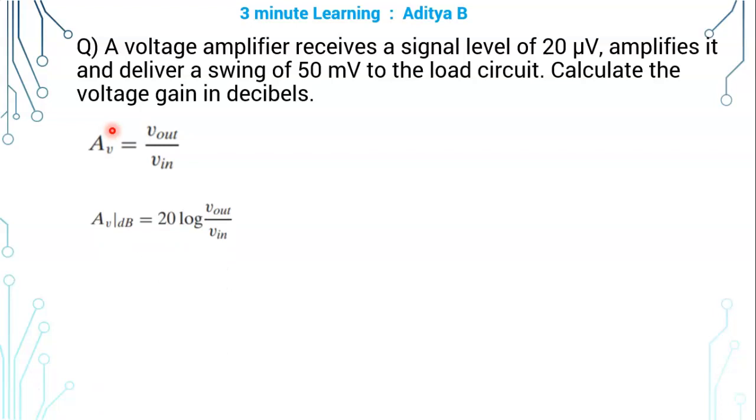Voltage gain in decibels is 20 log of Vout by Vin to the base 10. In this question, 50 mV is Vout and 20 µV is Vin. When you solve, you get around 68 dB.